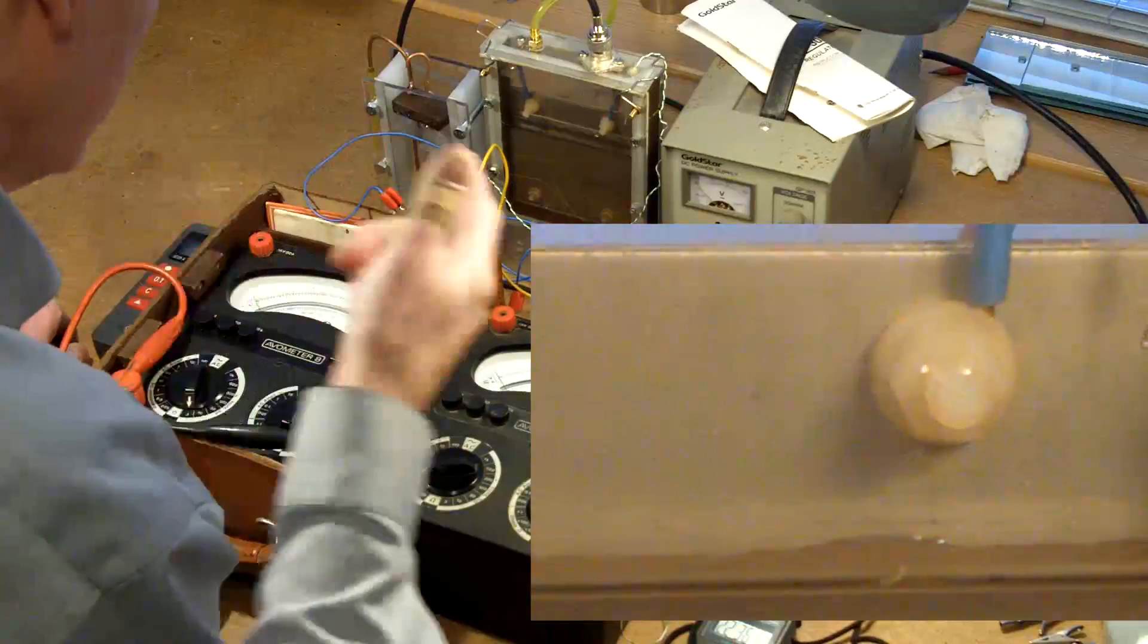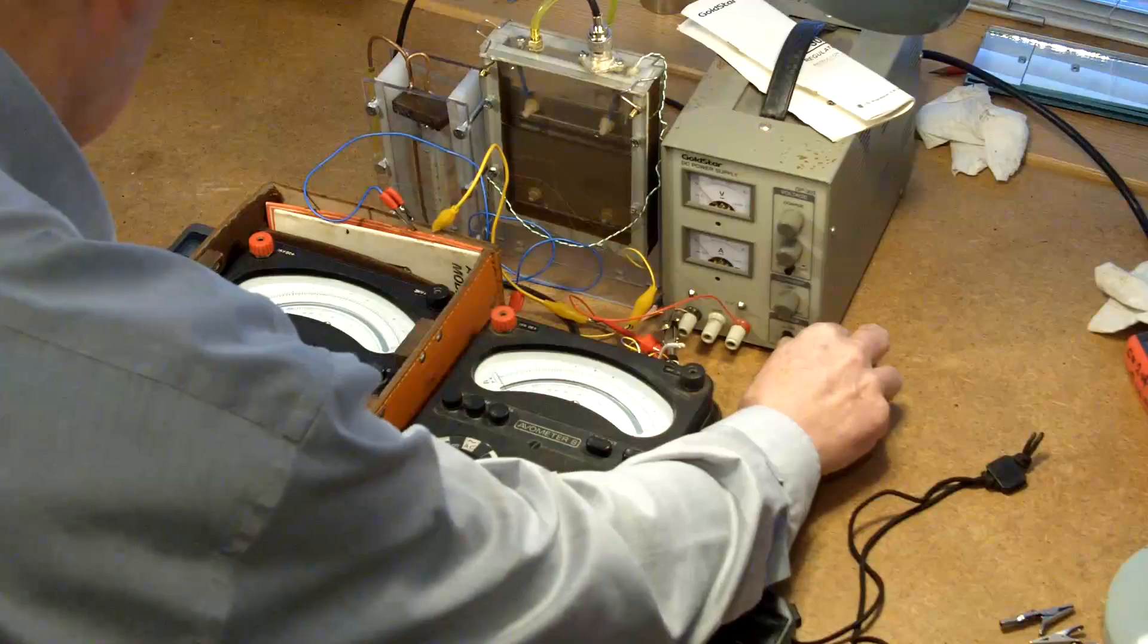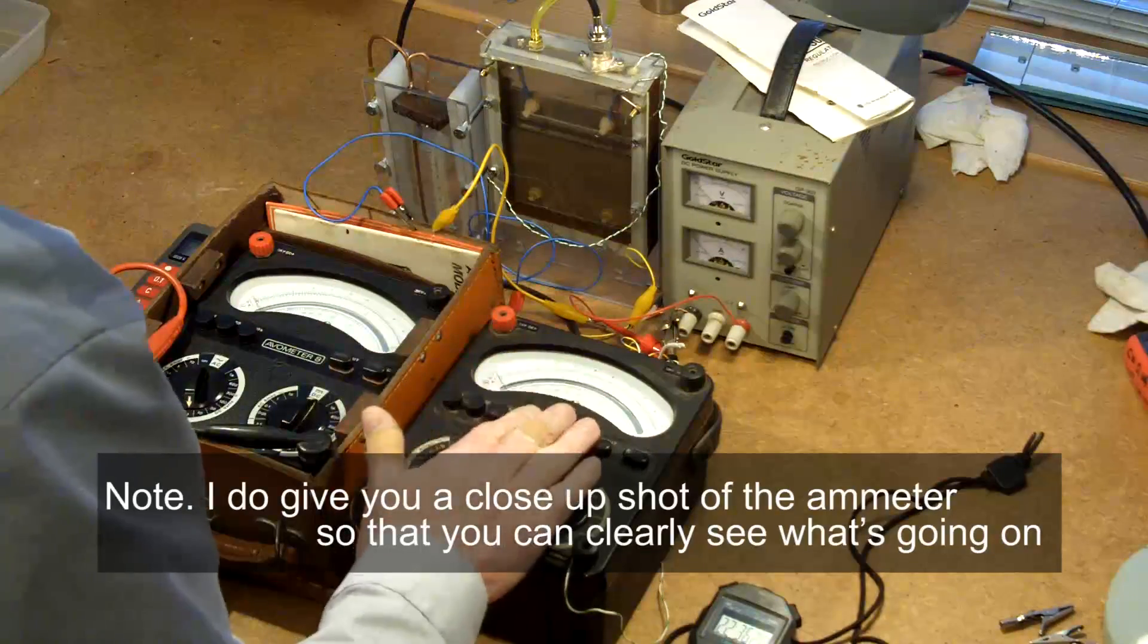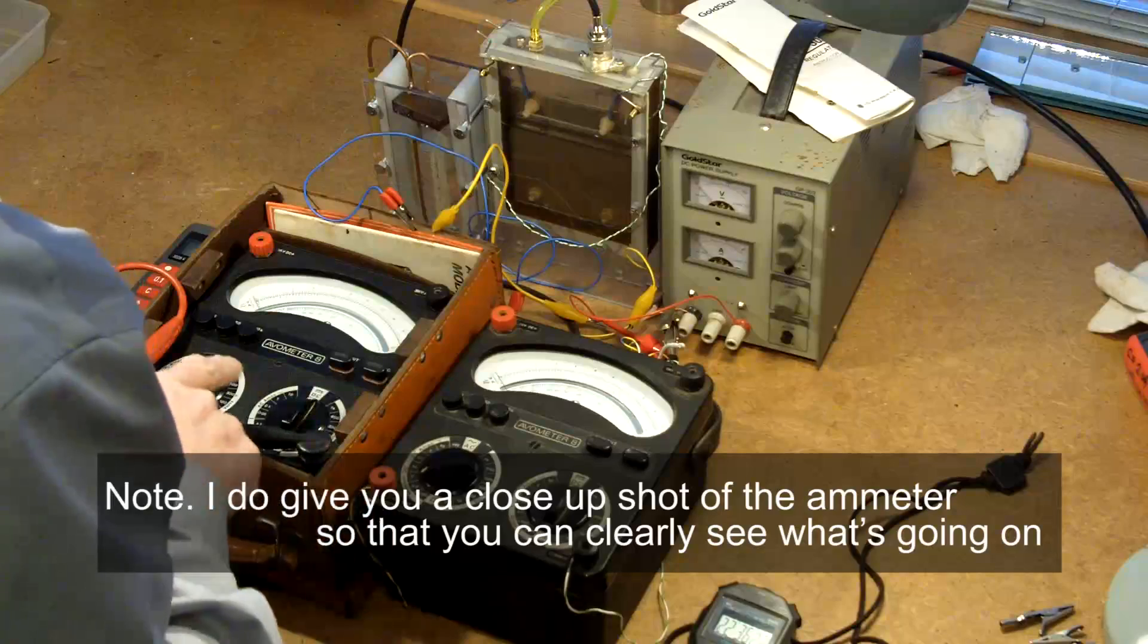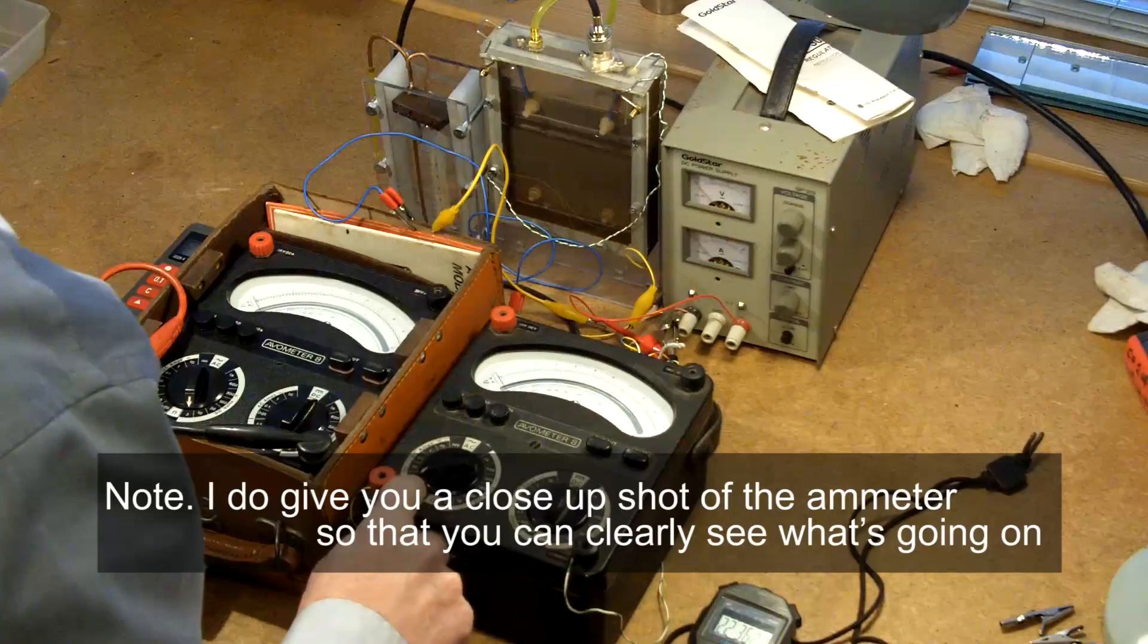And when I switch on the voltage now, remember I've got this at a low voltage, this is a volt meter, this is a current meter, this is on 3 volts DC, this is on 1 milliamp.